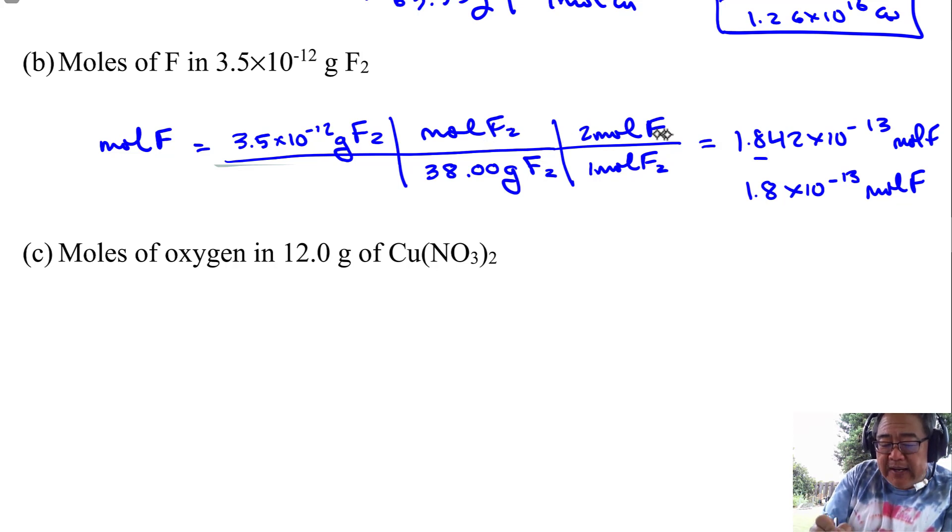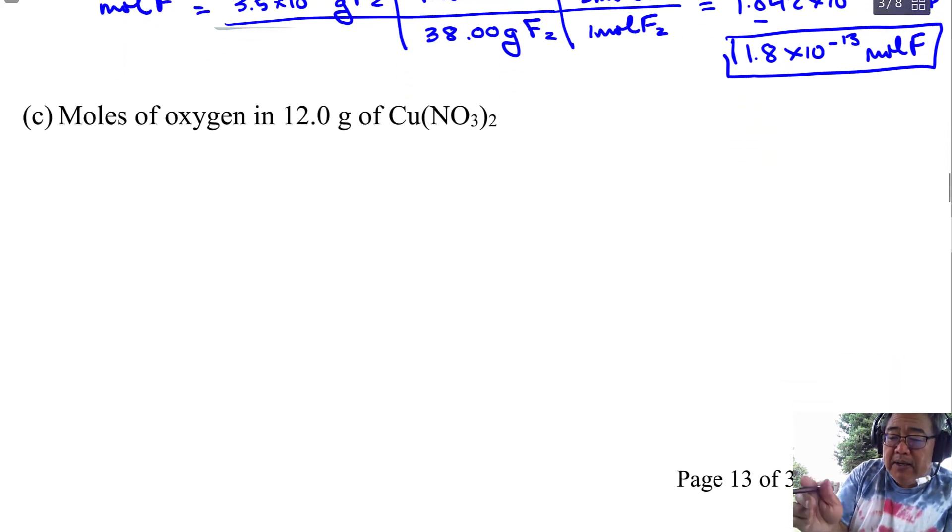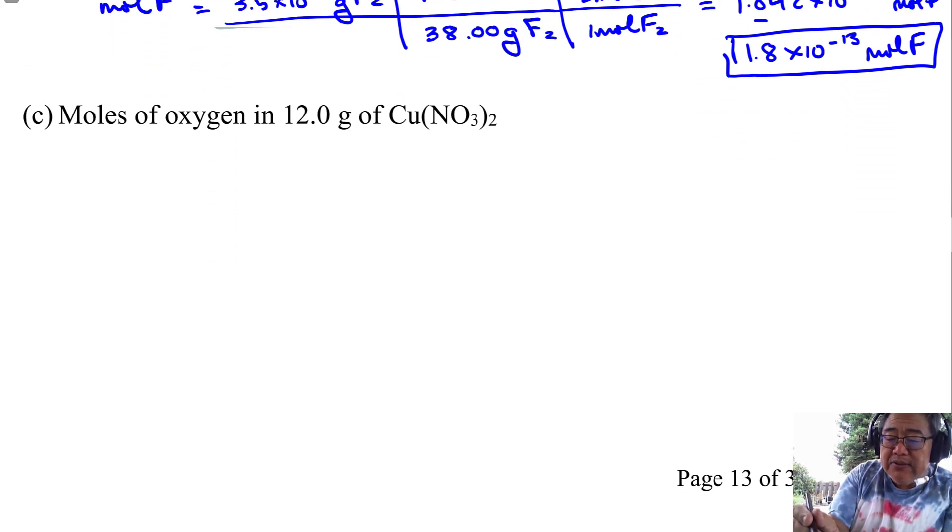This is the elemental fluorine. And I'm looking for moles of F. So then I need the molar mass of F2, which fluorine is 19, so F2 would be 38. So 38 grams of F2 for every mole of F2. And then there's two moles of F. Remember, I'm not looking for F2. I'm just looking for atomic fluorine. So it's F, two moles of F for every mole of F2. And I go ahead and do the math and I get this is my answer.